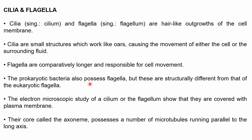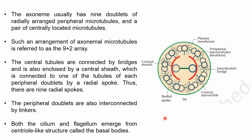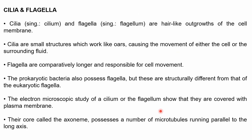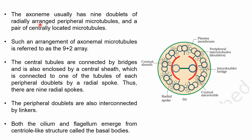Electron microscopic study of cilia or flagellum shows they are covered with the plasma membrane and their core is called the axoneme. The axoneme possesses microtubules running parallel to the long axis. The axoneme usually has nine doublets of radially arranged peripheral microtubules — these ring-like structures are present as doublets, meaning two present together — making nine such peripheral microtubule doublets.